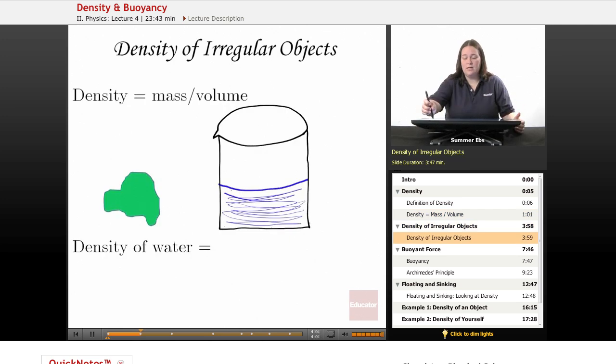We're looking at the density of irregular objects. If I wanted to measure the density of this green, maybe it's a rock shape right here, what I need to do is find the mass and the volume. Easier said than done, because I don't know how to find the volume of that by measuring it like we did with the cube.